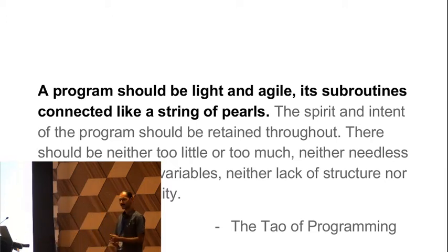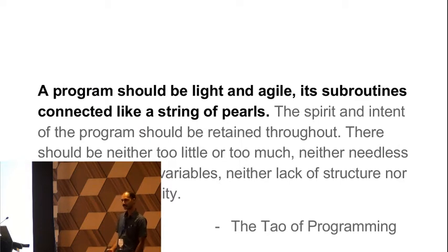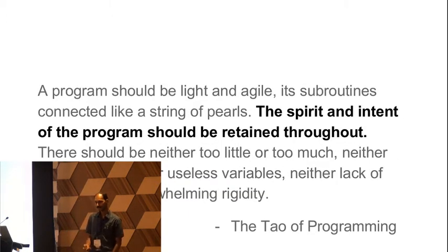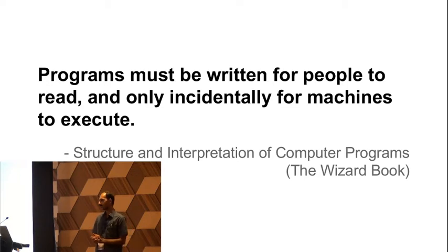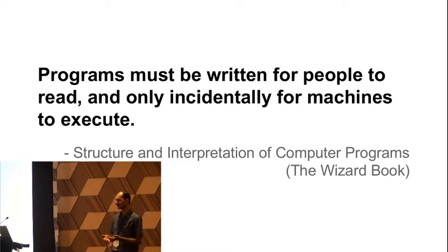So why do you really care about beautiful code? Code is code — you write it, it gets executed, and the job is done, right? Why do you really care about writing code beautifully? The reason is, we write code for getting a task done, but if you think deeply, programs must be written for people to read and only incidentally for machines to execute. Most of the time spent when you write a program is people looking at it, trying to understand it, trying to maintain it. Have you ever had a case where you wrote a program and after a week you couldn't figure out what it was doing?